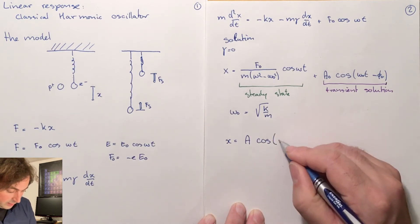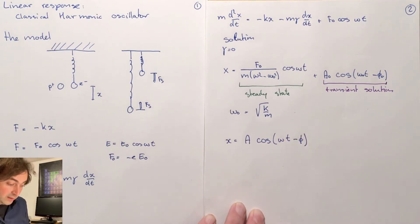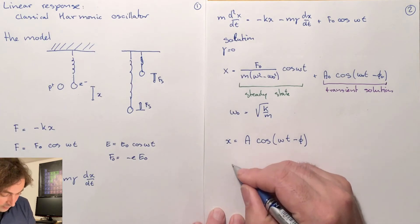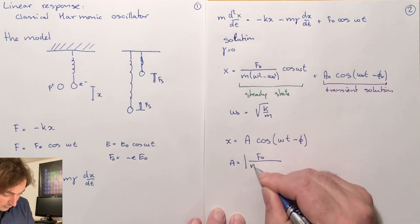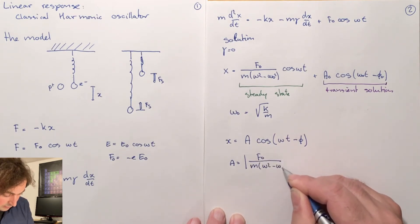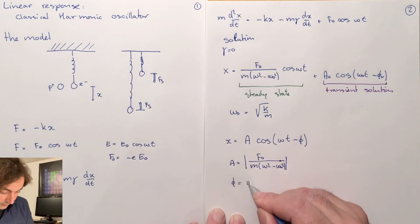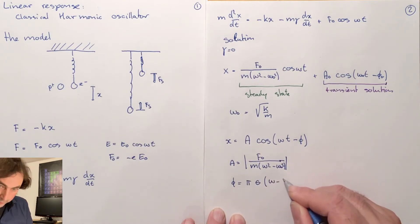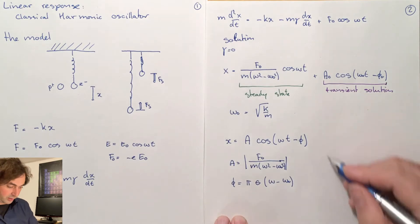Our steady state solution is given by an amplitude times cosine of omega t minus a phase. We have to add a phase because our pre-factor can have a positive and a negative sign; the amplitude is then the absolute value of that pre-factor. The phase is given by the heavy-side step function — zero when omega is smaller than omega zero and pi when omega is larger than omega zero.